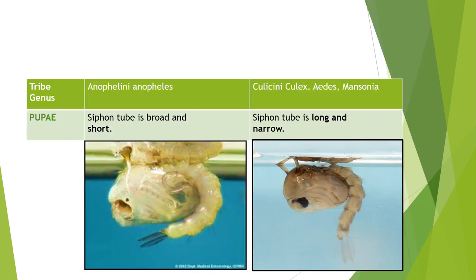Next is the difference between the pupa of Anopheline and Culicine. The pupa is a comma-shaped structure. In the case of Anopheles, the siphon tube (also called the trumpet) is broad and short, while in the case of Culicine, the siphon tube is long and narrow. Remember, in both Anopheline and Culicine, the siphon tube is present in the pupa — the only difference is that the siphon tube of Anopheles is short and broad, while the siphon tube of Culicine is long and narrow.